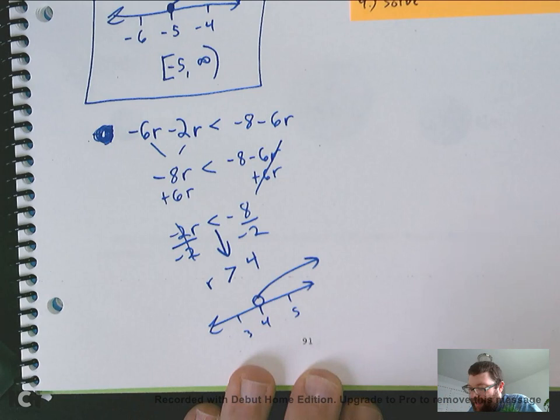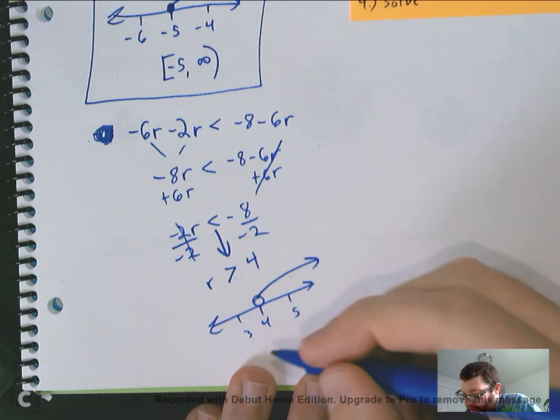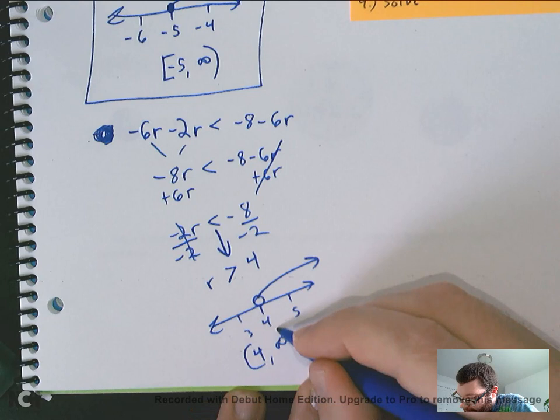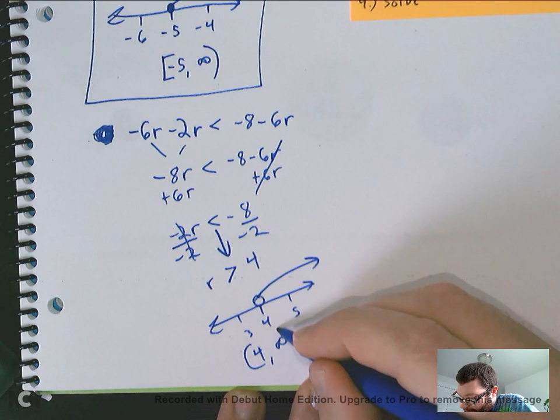And then, last step, least number, greatest number. Least number is going to be 4. Greatest number is going off to infinity. So, infinity. 4 doesn't quite equal it because it's got the open circle. So, I'm going to use a parenthesis. And then, infinity will always have a parenthesis. And that would be your 3 answers right there.